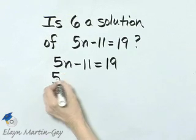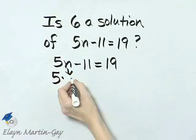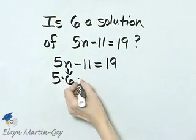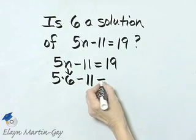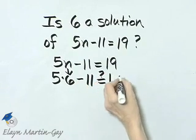So that's 5 times, I'm replacing n with 6, minus 11. I want to know, is that 19?